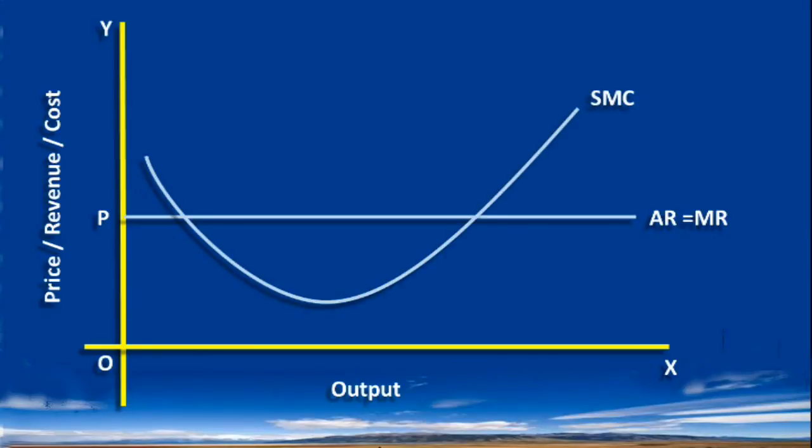SMC is the short run marginal cost curve. Short run marginal cost is equal to marginal revenue at point E. At this point, marginal cost is on the increase. Hence, the firm is in short run equilibrium. M is the equilibrium output.